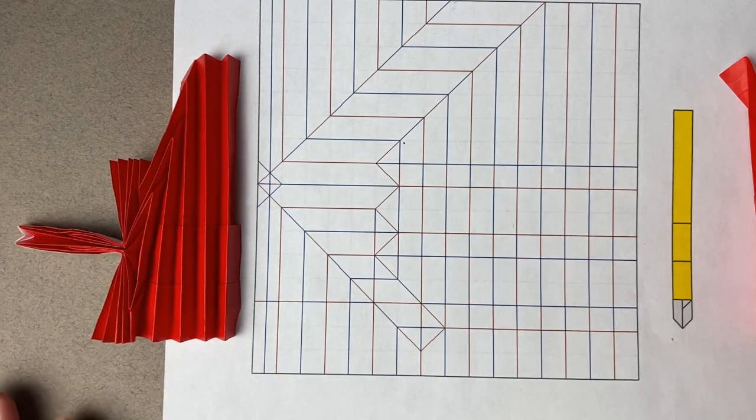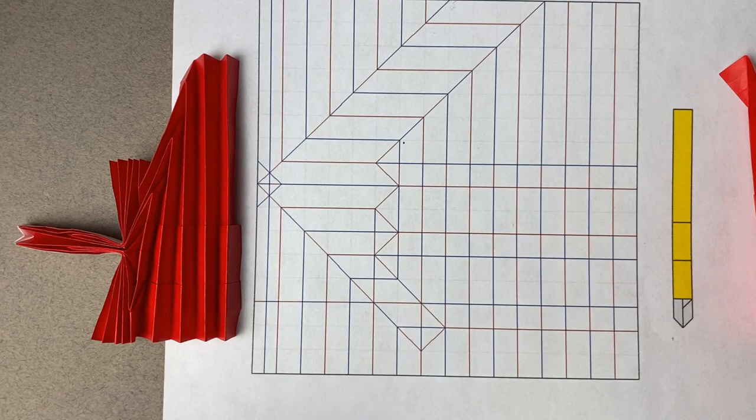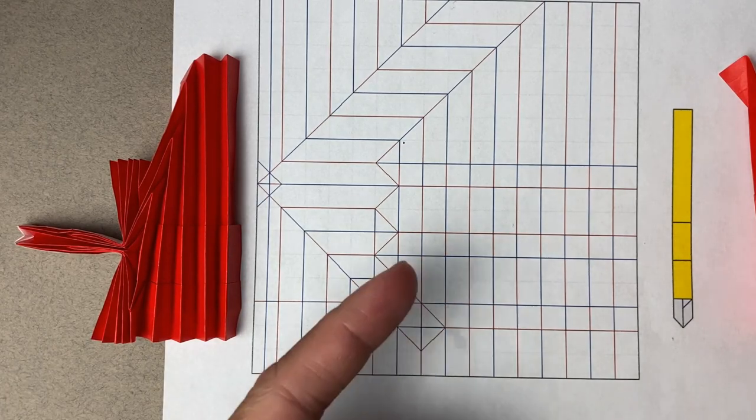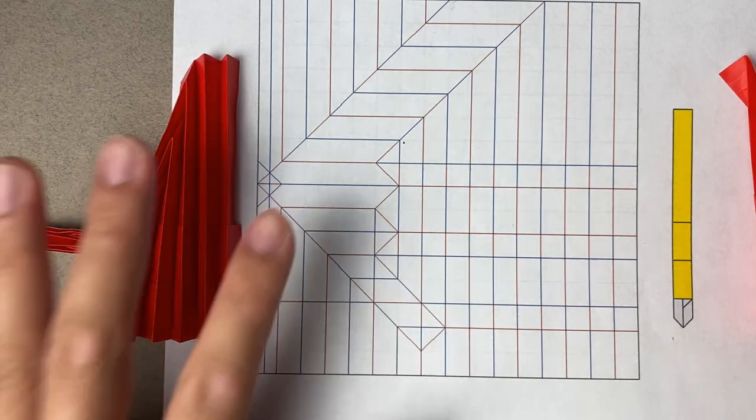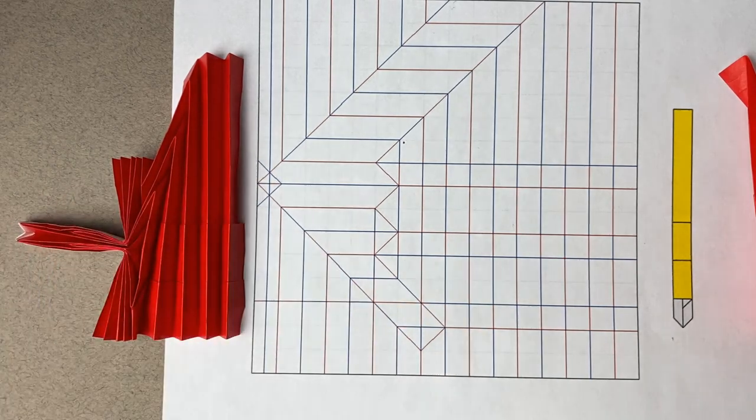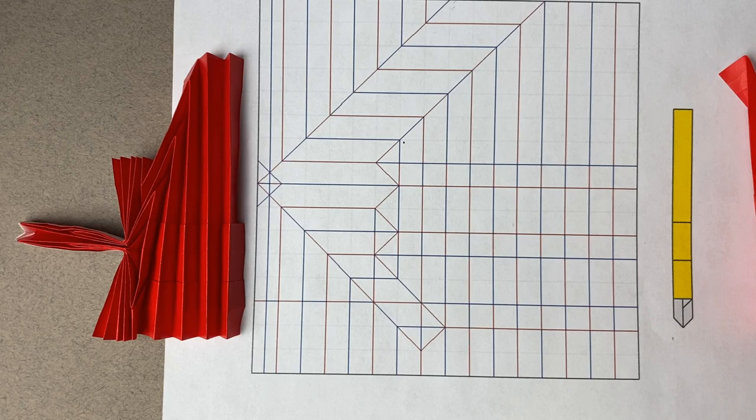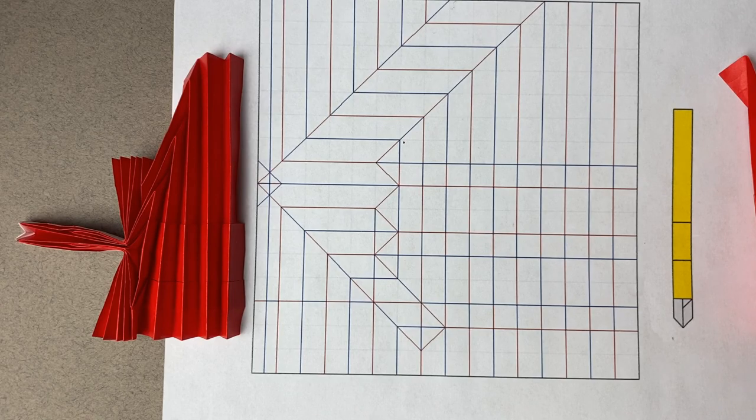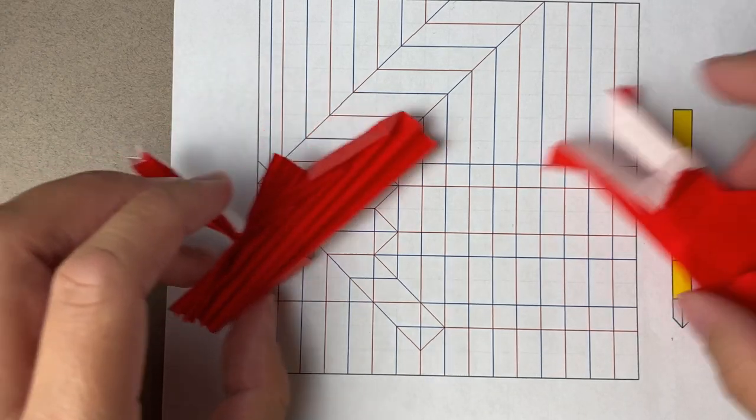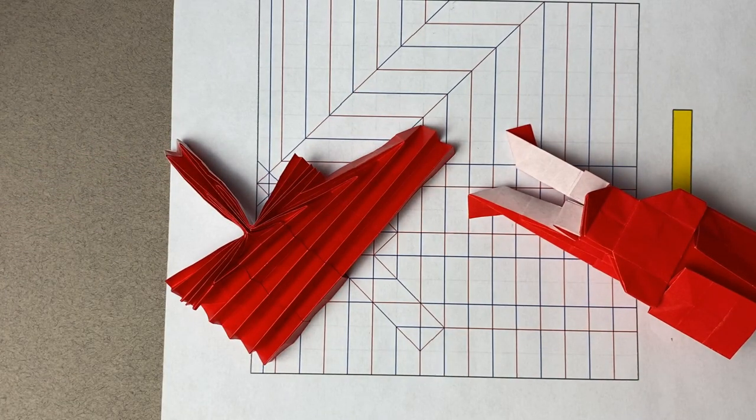So, yeah. Congrats for making it through class 6. If you guys want, the exercise for class 6 is basically to fold Damien's sun beetle. So, that crease pattern, the post-to-crease pattern, is also going to be posted in the description. So, go check that out. It's a lot of fun. I think it's a great model. You guys have seen it before. It's in the thumbnail. But, yeah.